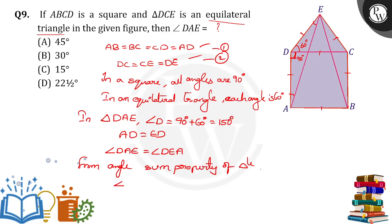So angle DAE plus angle ADE plus angle DEA is equal to 180 degrees. Let's take it as X. So X plus 150 plus X is equal to 180.